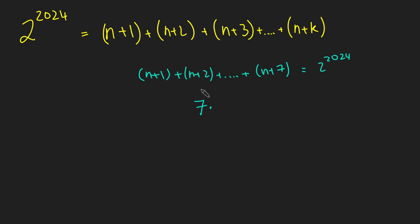So I've got 7 terms here, and the average term here is just the first term plus the last term divided by 2, which is just n plus 4. So I get 7 times n plus 4 is 2 to the 2024.